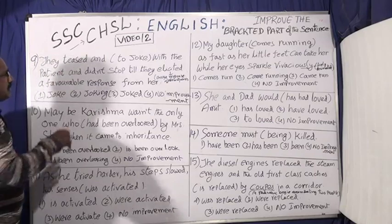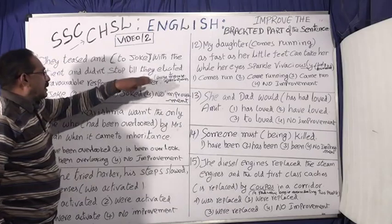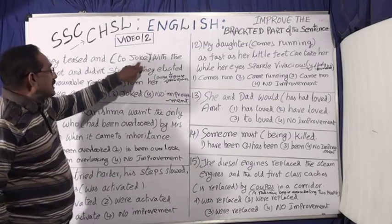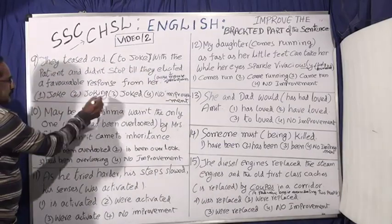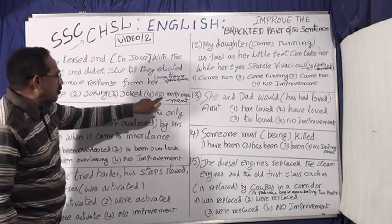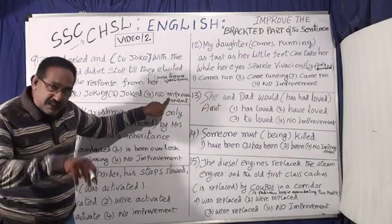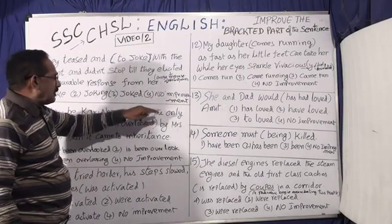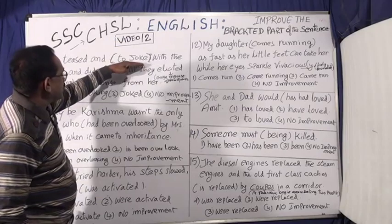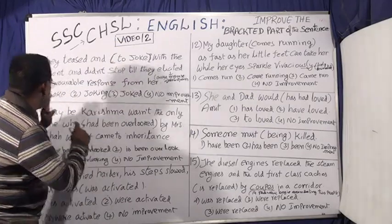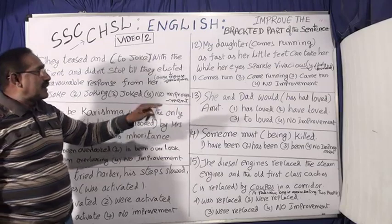In the bracket part, a word is given. Whatever is given in the bracket part, it may or may not need to be changed. If it needs to be changed, you have to select one alternative from options one, two, or three. If it does not need to be changed, then your choice is option four: no improvement. If you want to change the bracketed word, consider alternatives one, two, or three. Otherwise, your answer is four, no improvement. That is the question type.